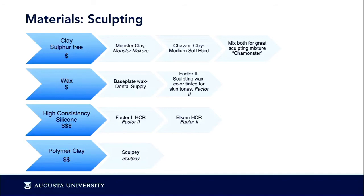Wax is my preferred material when making facial prosthetics because clay will deform if you accidentally drop something on it — wax has a little more forgiveness. I have a couple of different waxes here: this pink base plate wax is used in dental work, and this other wax for facial prosthetics has a little more beeswax in it, giving it more softness. You need heat and metal tools to sculpt with wax.